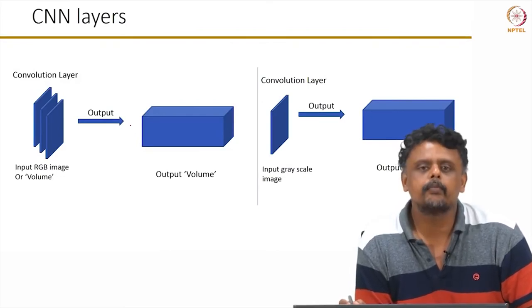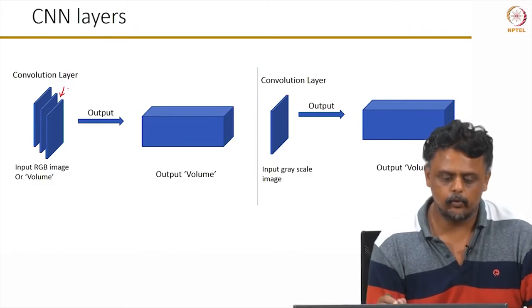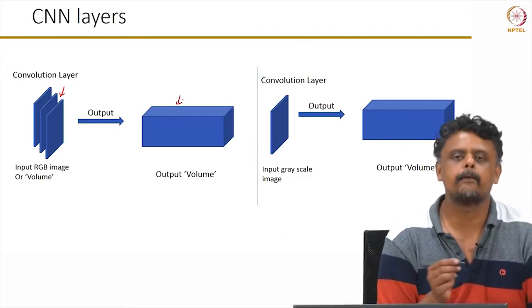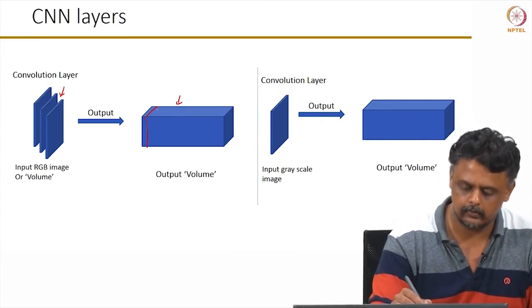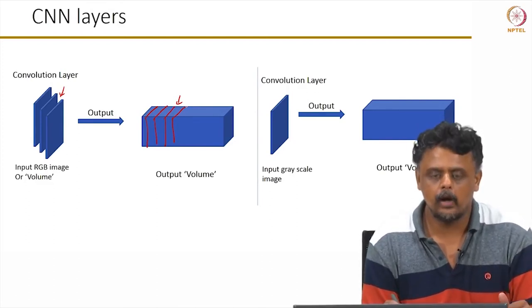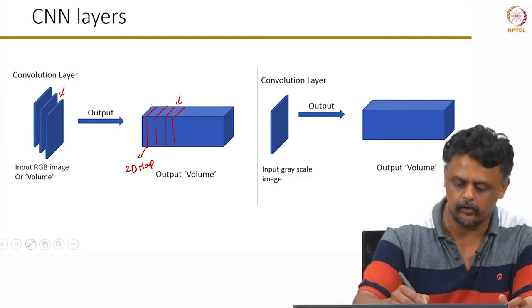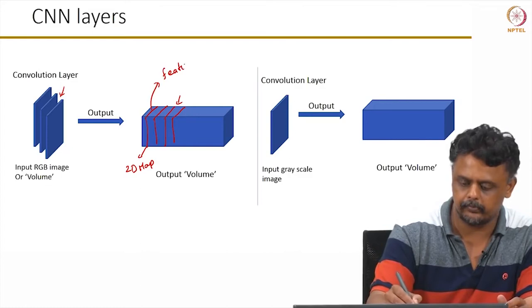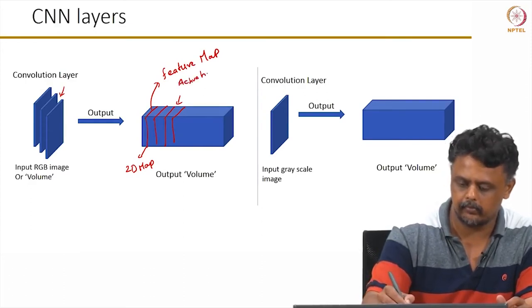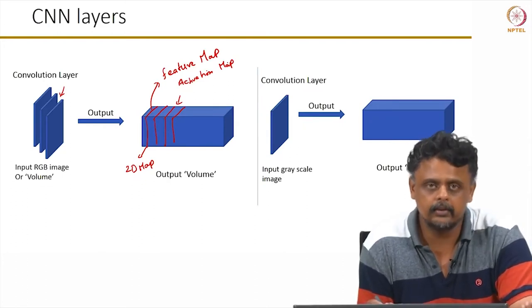To summarize in visual form: a convolution layer takes an RGB image as input. The output from a layer is basically a volume, which if sliced gives multiple 2D outputs. Each of these 2D outputs is often referred to as a feature map or an activation map. The number of output feature maps is entirely within our control, and the size of each 2D map is determined by the operations we perform.